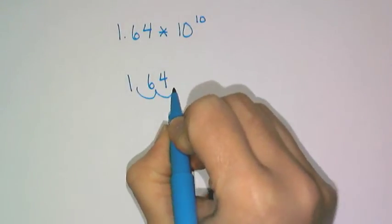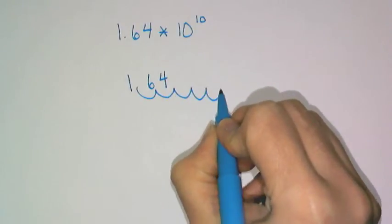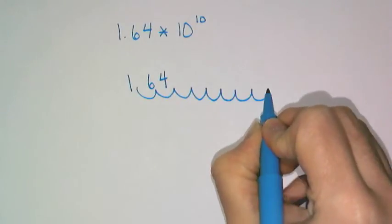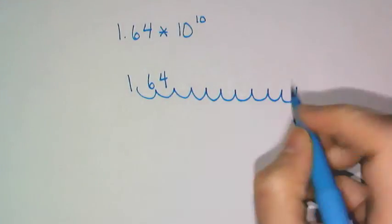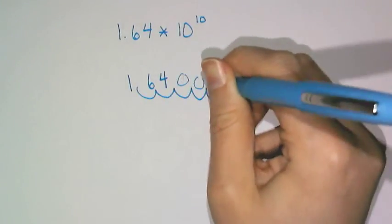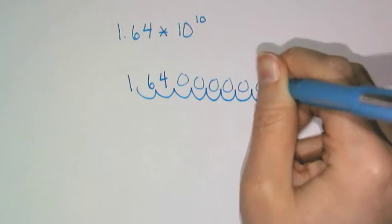So I have 1, 2, 3, 4, 5, 6, 7, 8, 9, 10. And what I need to do in these empty spaces is add my 0 placeholders.